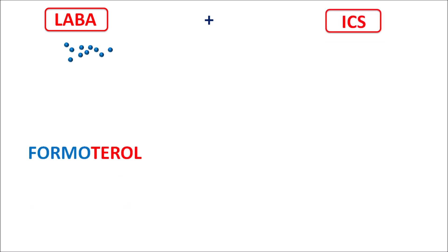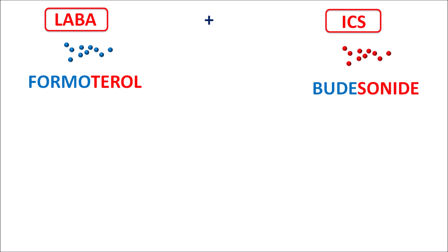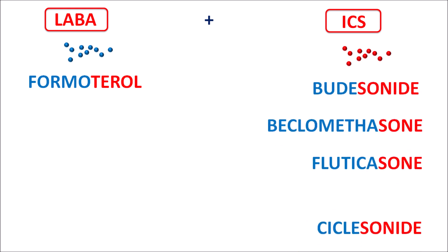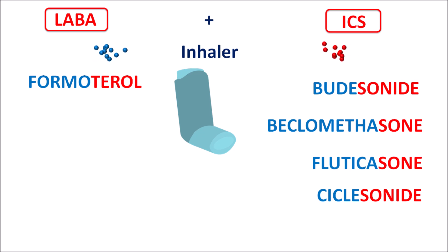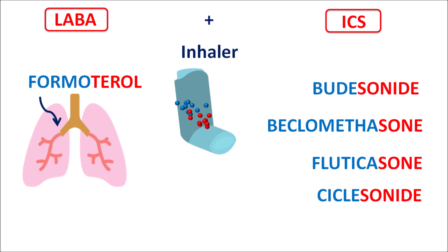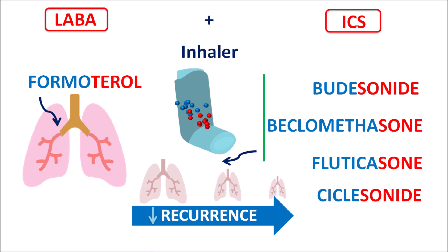Long-acting beta-2 adrenergic agonists can be combined with other drug categories such as ICS. Formoterol can be combined with inhaled corticosteroids such as budesonide, beclomethasone, fluticasone, or ciclesonide. Any of these steroids can be combined with Formoterol and formulated in different dosage forms — for instance, as an inhaler where both Formoterol and ICS are combined and administered into the mouth. Formoterol produces bronchodilation, while inhaled corticosteroids reduce the recurrence of bronchospasm.